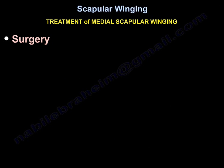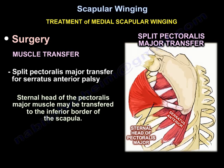Muscle transfer is another surgical option: the split pectoralis major transfer for serratus anterior palsy, where the sternal head of the pectoralis major muscle may be transferred to the inferior border of the scapula.